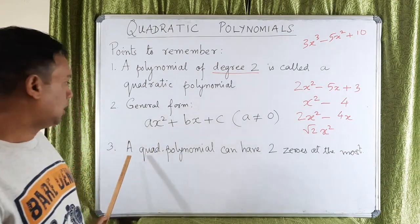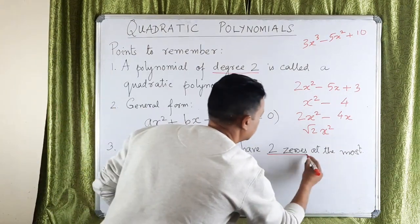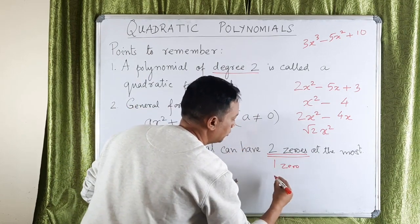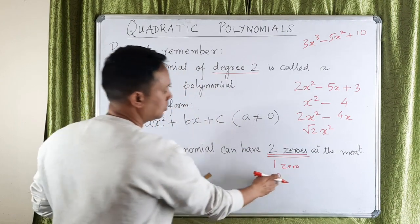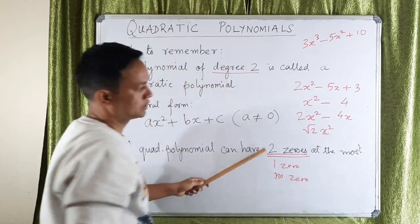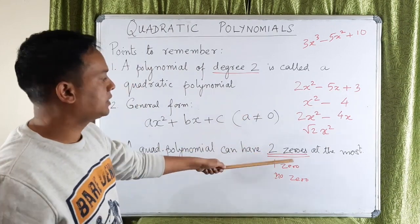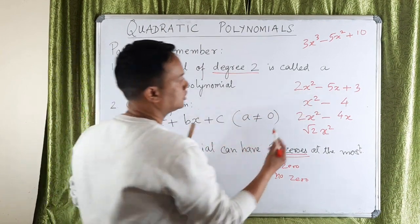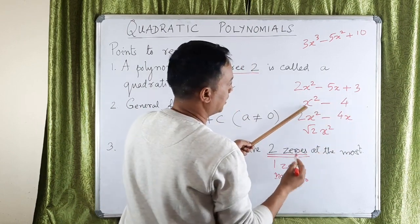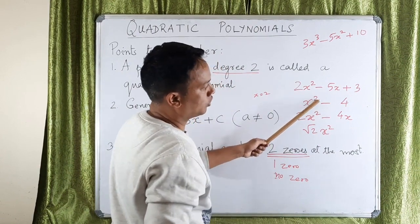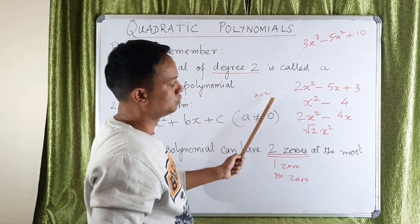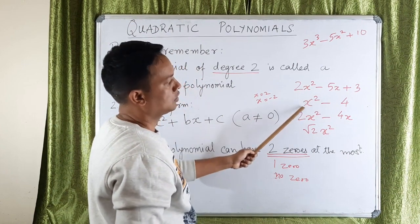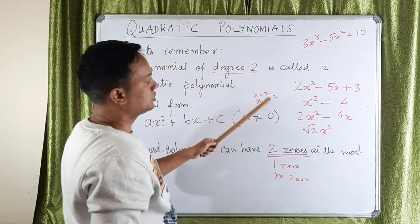A quadratic polynomial can have at most 2 zeros. This means it cannot have more than 2 zeros. It may have 1 zero, or it may not have any real zeros at all. Zeros means the value of x for which the polynomial becomes 0. For example, in x squared minus 4, if I put x equals 2: 4 minus 4 equals 0. If I put minus 2: minus 2 squared is 4, and 4 minus 4 is again 0. So x equals 2 and x equals minus 2 are the zeros.